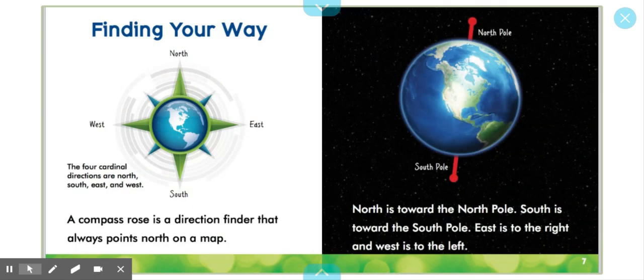Finding Your Way. The four cardinal directions are north, south, east, and west. A compass rose is a direction finder that always points north on a map.